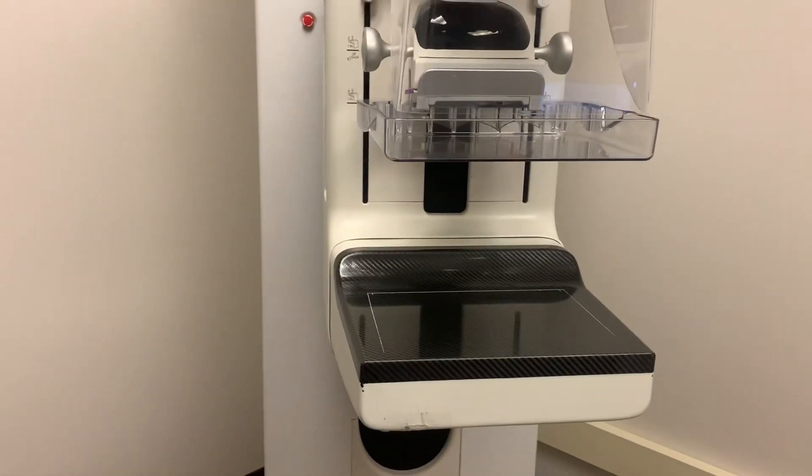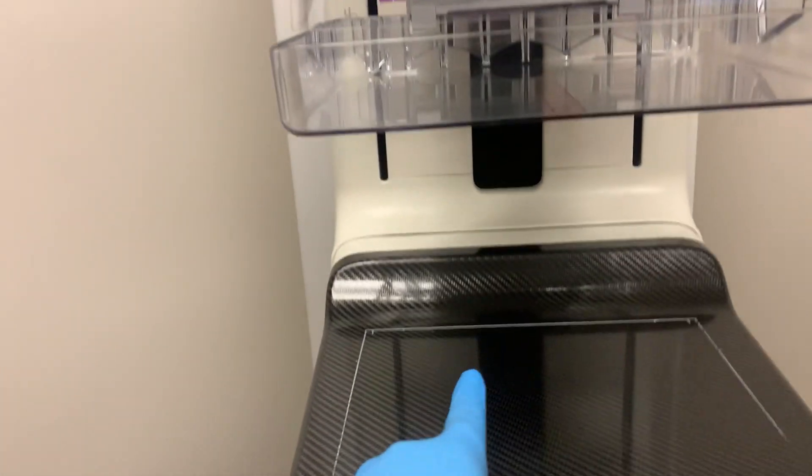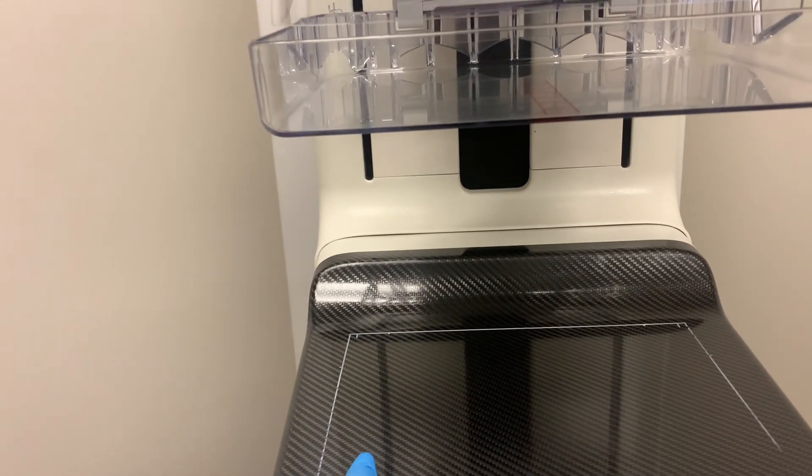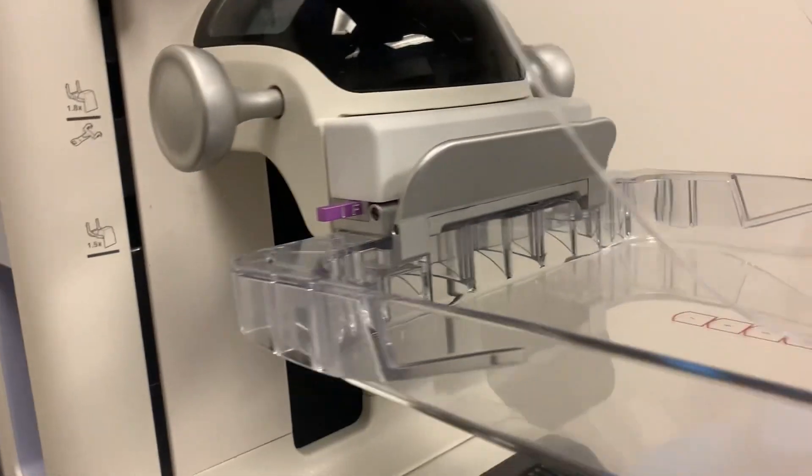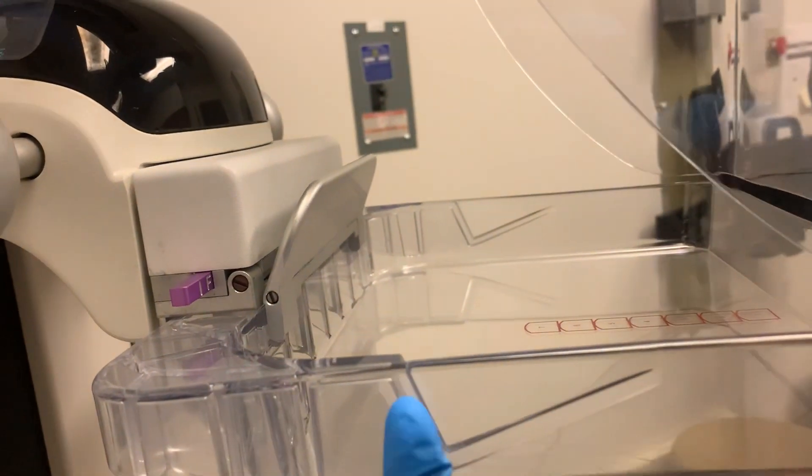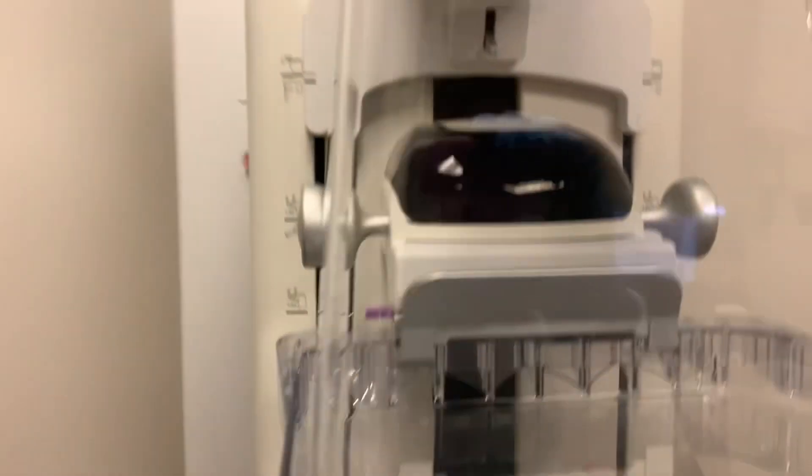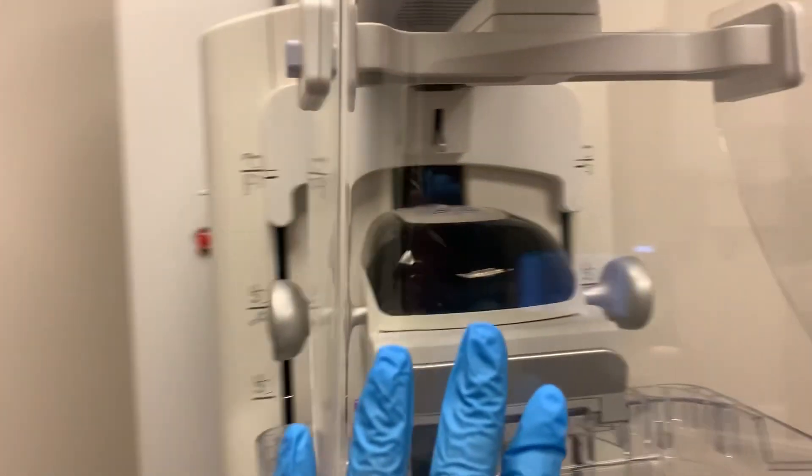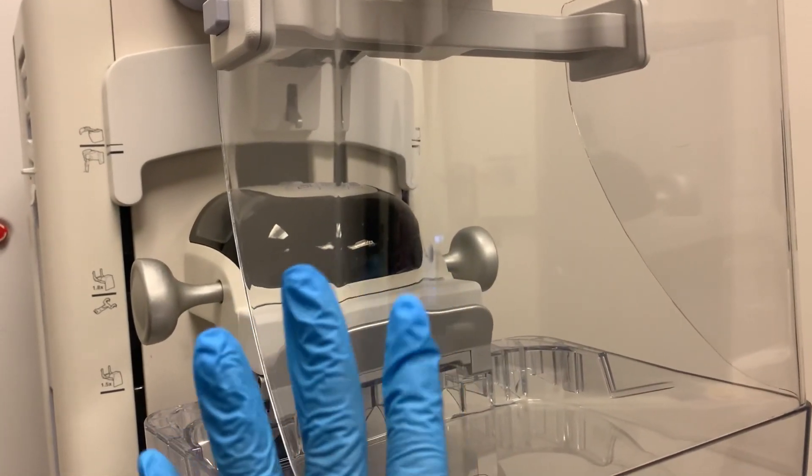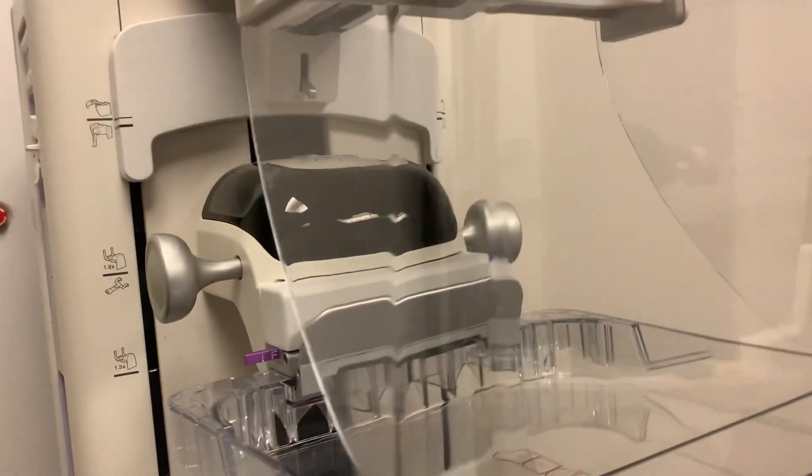For this video, this is the detector. This is where the breast fits, one breast at a time. We have our compression paddle. This is what is going to come down to squeeze the patient's breast. And then you have your face shield. This is going to stay right here so that the patient's head does not get in the picture whenever they lean in.